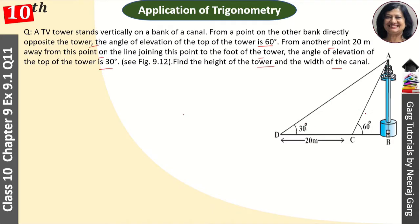We have a diagram given. AB is our tower. The tower's height is H, and the width of the canal BC, we take this as X. These two things we have to find out.